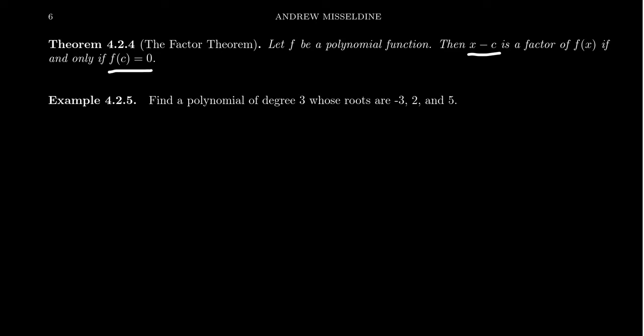If and only if f of c equals 0. And so this tells us that there's this one-to-one correspondence with the x-intercepts of the function. So that's these things over here. f of c equals 0 means that c is an x-intercept of the graph. These x-intercepts are in one-to-one correspondence with the factors x minus c.